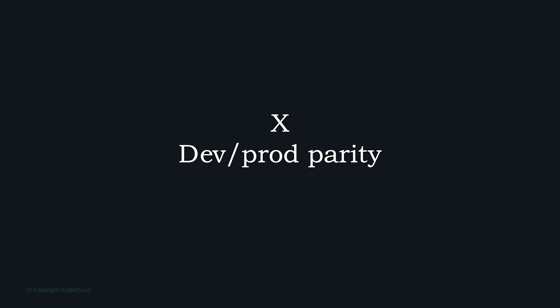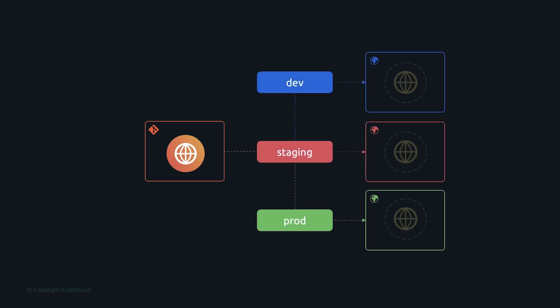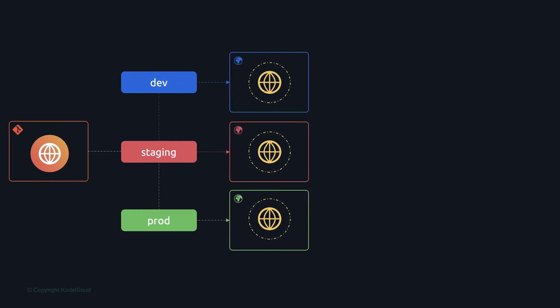Here is an example of the Flask application accepting the SIGTERM signal and then terminating gracefully. The next factor is dev/prod parity. There are three environments: dev, where the application is developed and tested during development; staging, where it is deployed and tested against a production-like setup; and prod, where the application is hosted for users.